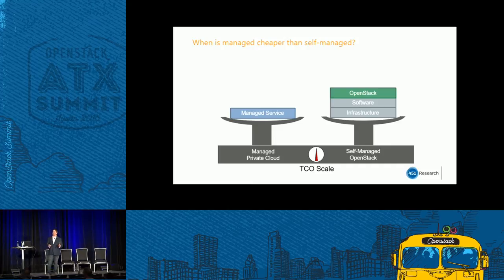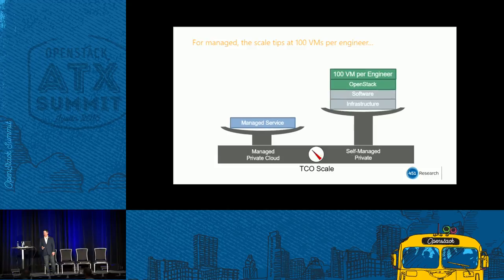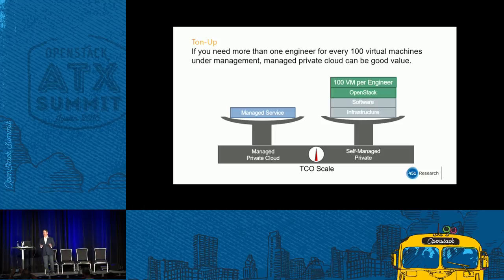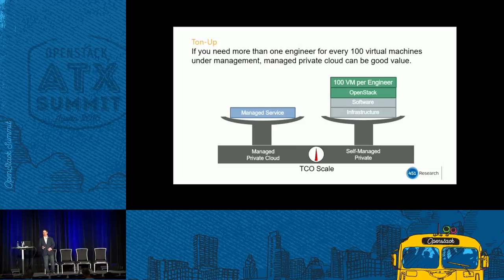We also compared when managed services can be cheaper than self-managed. You'd expect managed services to cost more, but we found a tipping point: if you have 100 virtual machines managed per engineer, it's actually a better value to do managed services at that point. Among managed services responses, the smallest to the highest showed a 14x price difference — the most expensive came from SIs. In general, if you need more than one engineer per 100 virtual machines, managed services is actually the cheaper route.